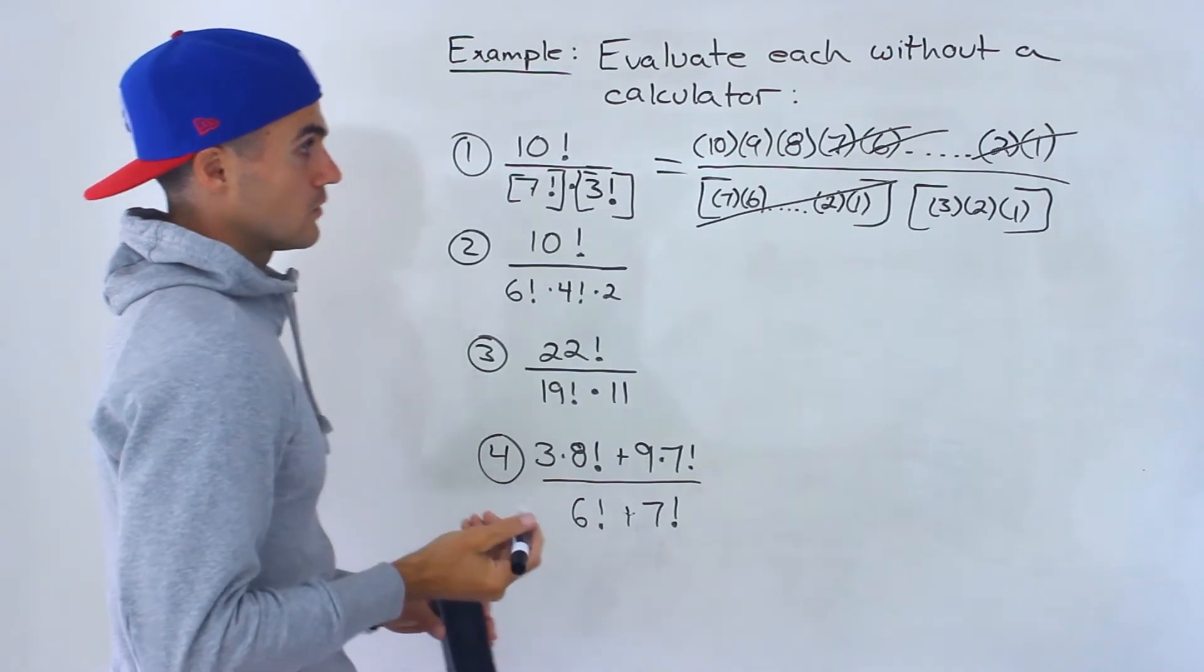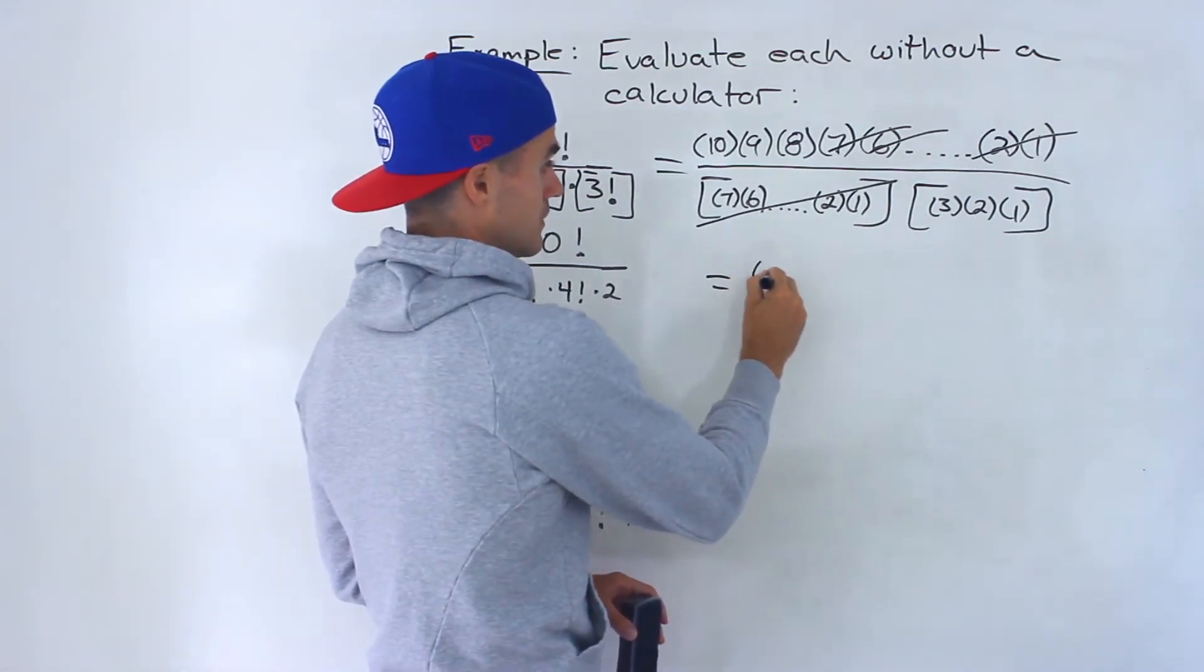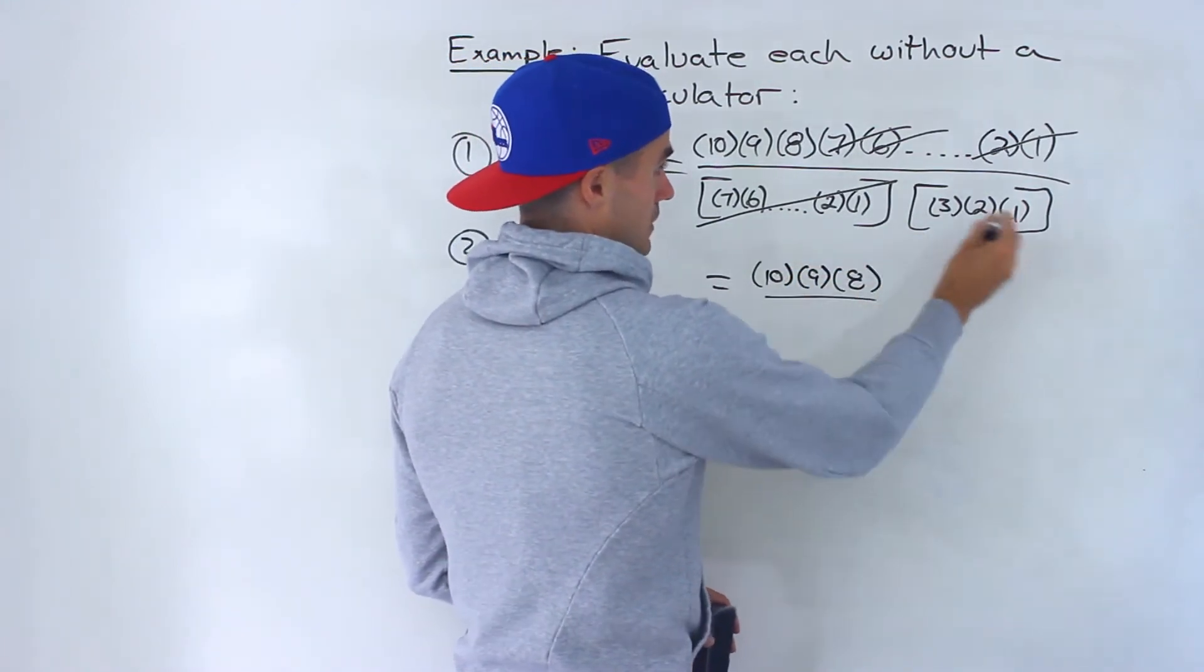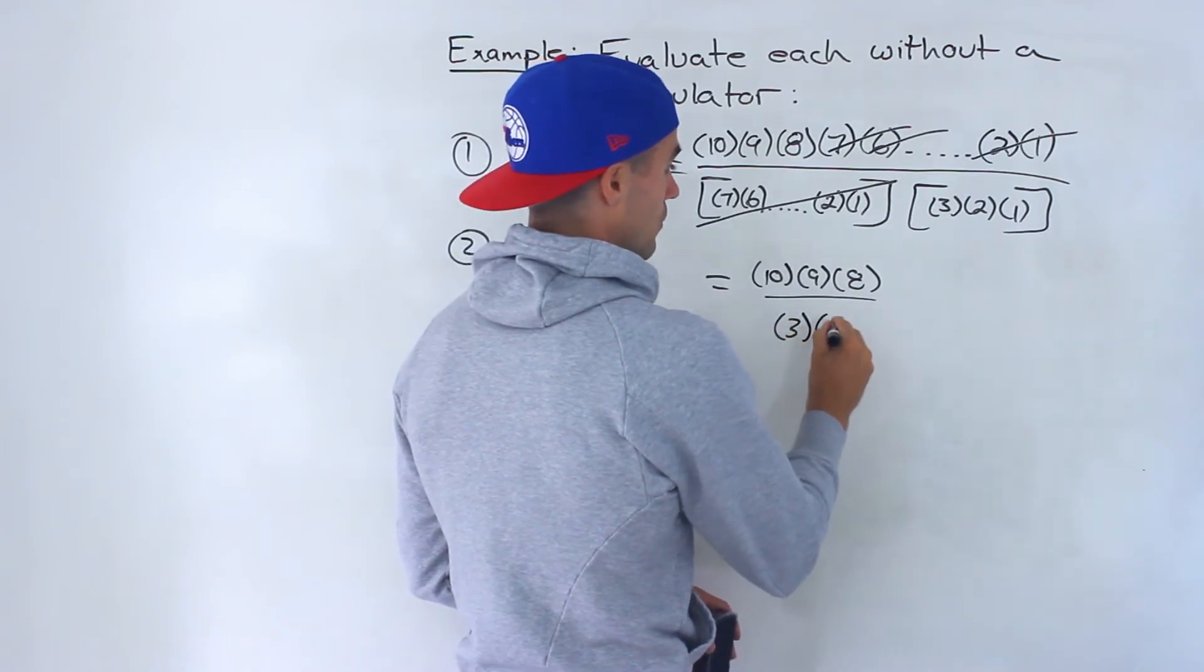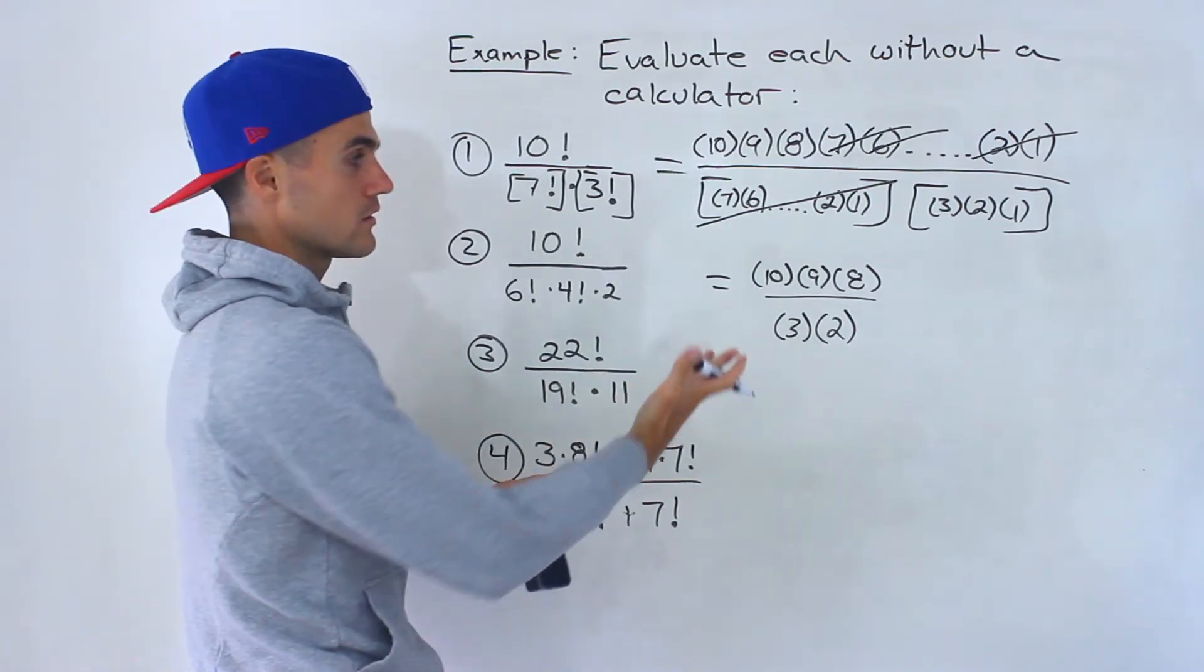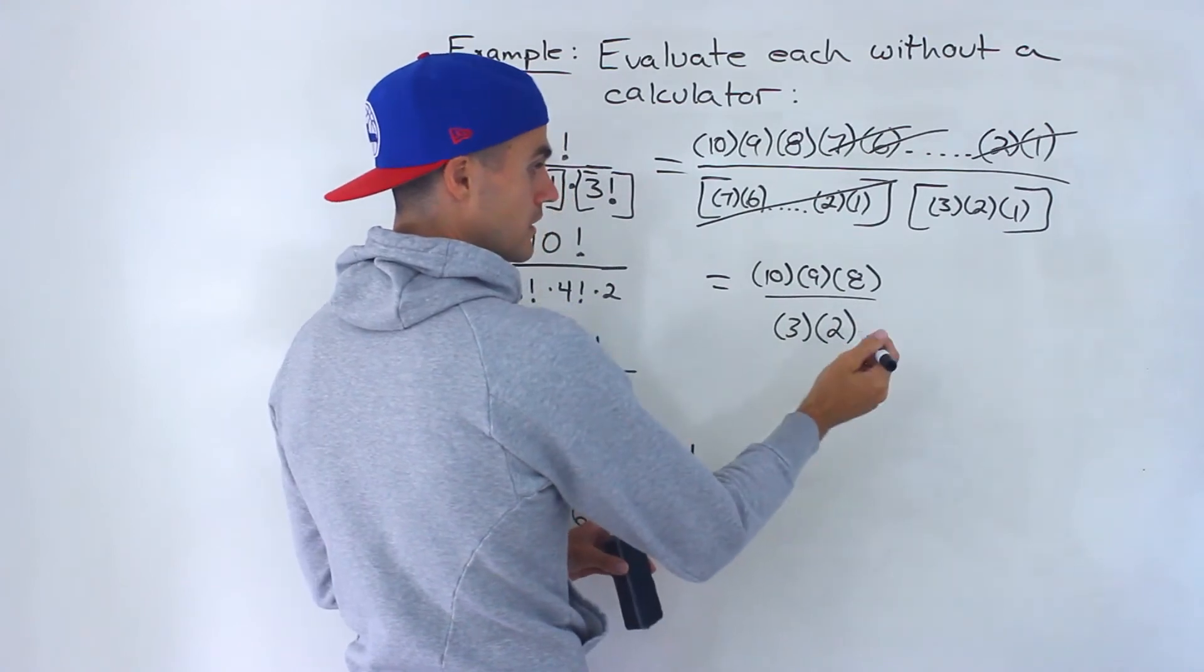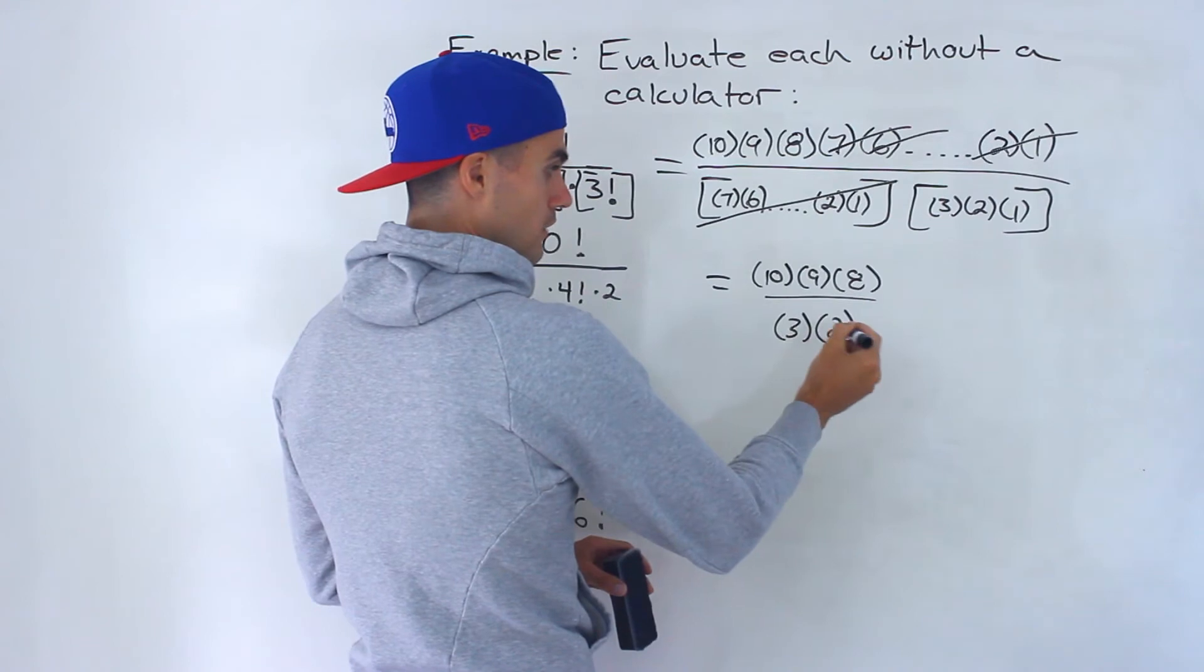And then what we have, a lot nicer, we got 10 times 9 times 8. Over here we got 3 times 2 times 1. We could just ignore the 1, so we could just put 3 times 2.